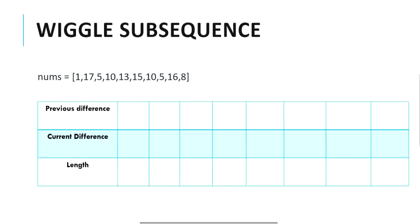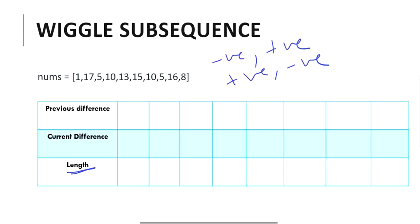We have three variables: previous difference, current difference, and length. Length is our output, which determines the longest length of the wiggle subsequence. This length will increase at every step if and only if the previous difference is negative and the current difference is positive, or the previous difference is positive and the current difference is negative — only alternating positive and negative differences will increase the length.